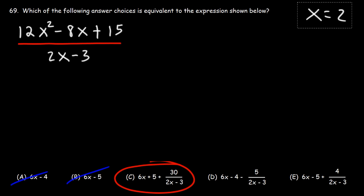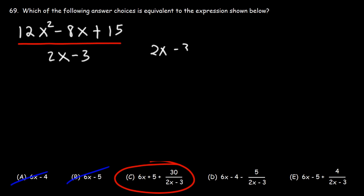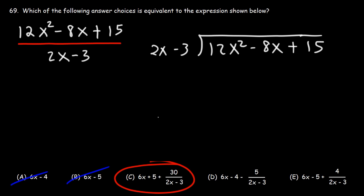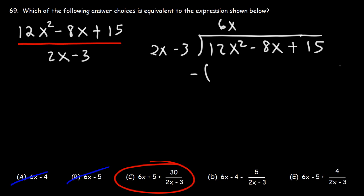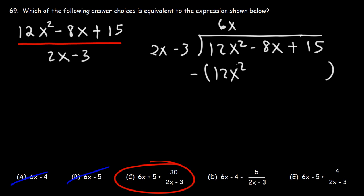But let's use long division to confirm our answer. Here's the process: Step 1, divide. Step 2, multiply. Step 3, subtract. So let's divide 12x squared by 2x — that's going to give us 6x. Next, multiply: 6x times 2x is 12x squared, and 6x times negative 3 is negative 18x.